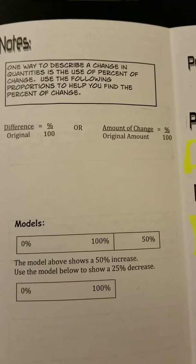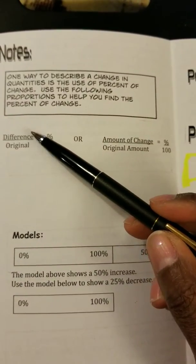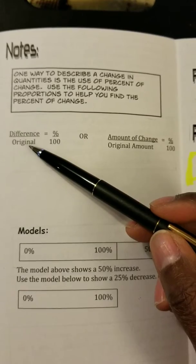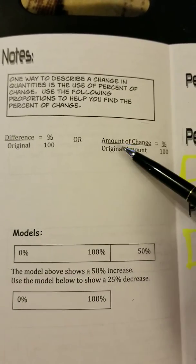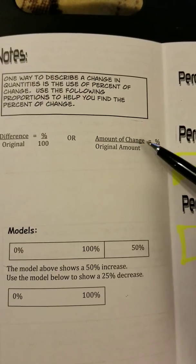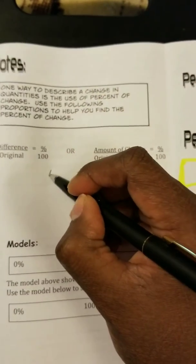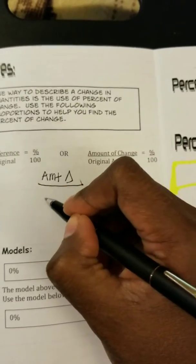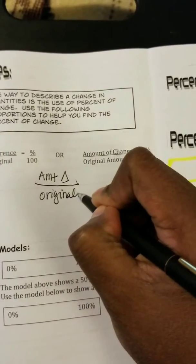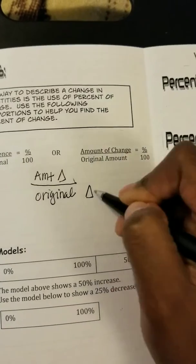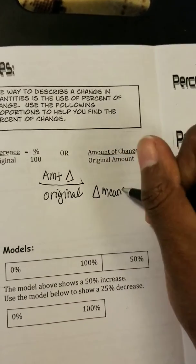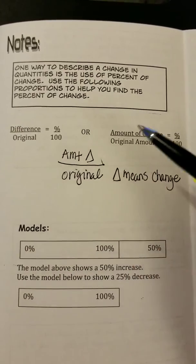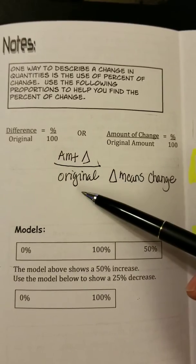These two proportions will help you find the percent of change. We take the difference between the original amount and the changed amount — meaning we subtract those two. What we get is our difference over what we originally started with, equals percent over 100. Or we can write amount of change over the original amount equals percent over 100. Another way you'll see this written is with a triangle — called delta — over the original, meaning change over the original. So we can take the amount of change, divide it by the original amount.